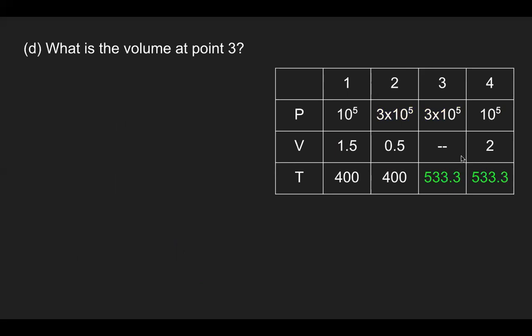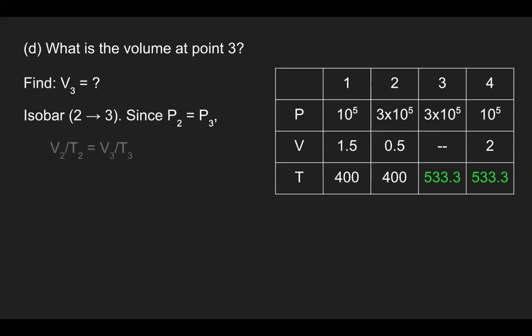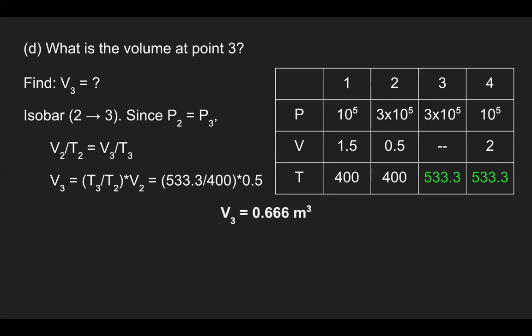Next, we find the volume at point three — the last slot in the chart. Using the isobar from two to three, we apply the same relationship V2/T2 = V3/T3, and solve for volume at point three since we have all the needed information. The volume at point three is 0.666 cubic meters.